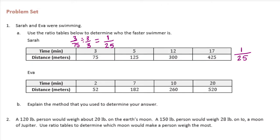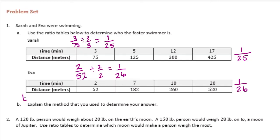Let's see what Eva can do. Eva in 2 minutes swims 52 meters. I can divide both of those by 2: 2 divided by 2 is 1, and 52 divided by 2 is 26. So for every one minute, Eva swims 26 meters. We can see that the faster swimmer is Eva — she swims further in 1 minute than Sarah.